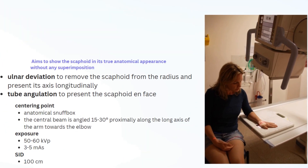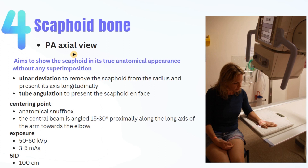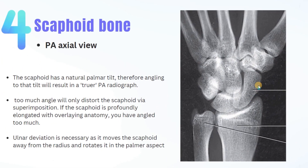Finally, the PA axial view is quite similar to the first PA projection. The only difference is a 20 to 30 degree angulation toward the elbow, which removes the scaphoid superimposition from the radius and the other carpal bones. Remember, too much angle will only distort the scaphoid via superimposition. Don't forget the ulnar deviation, which is necessary as it moves the scaphoid away from the radius and rotates it to the palmar aspect. This is the best view to see the whole length of the scaphoid.